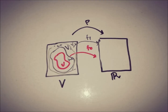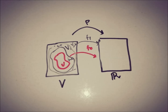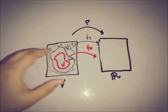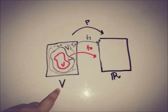Hello everyone, this is Da from eAcademy. Today this video is the fourth part of the Hahn-Banach theorem. In this video we will discuss the technique we will use in order to prove the Hahn-Banach theorem when we have uncountable elements in the linear space V.